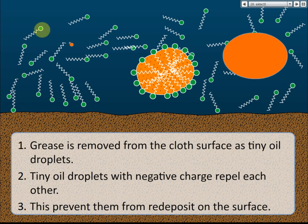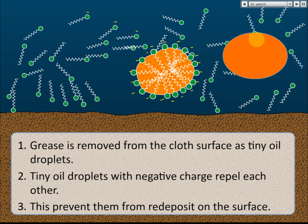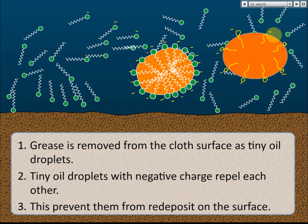If there is another piece of grease, we find that it carries a negative charge on its surface, because all the hydrophilic parts carry negative charge. Since these grease droplets all carry the same charge on the surface, they repel each other and can't get close together or combine. So when you rinse the cloth with water, the grease is removed easily as tiny oil droplets.